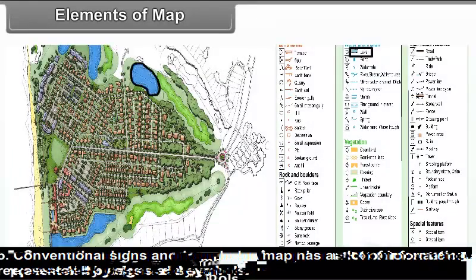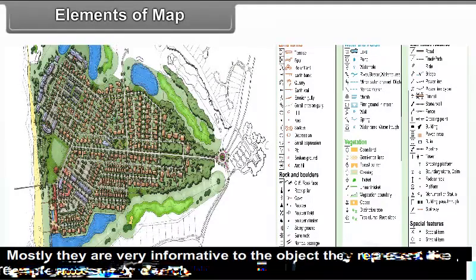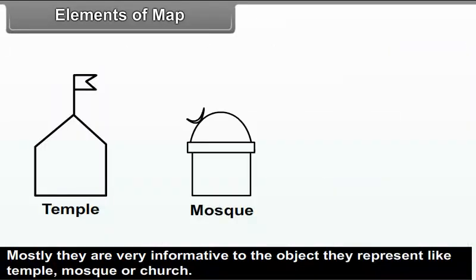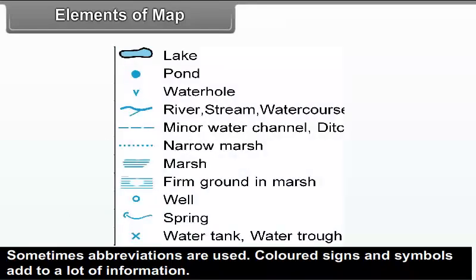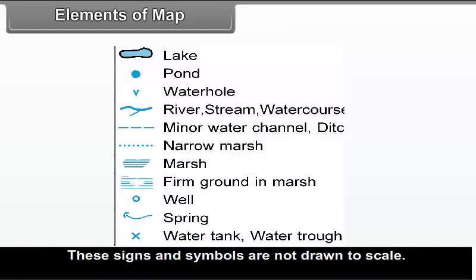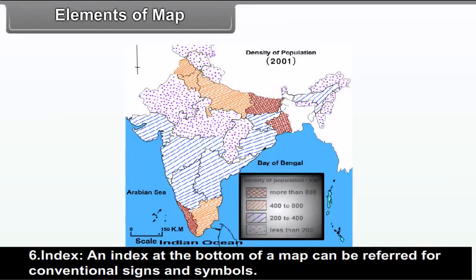Conventional Signs and Symbols: A map has a lot of information represented by signs and symbols. Most are very informative relative to the object they represent, like a temple, mosque or church. Sometimes abbreviations are used, and coloured signs and symbols add a lot of information. These signs and symbols are not drawn to scale. An index at the bottom of a map can be referred to for conventional signs and symbols.